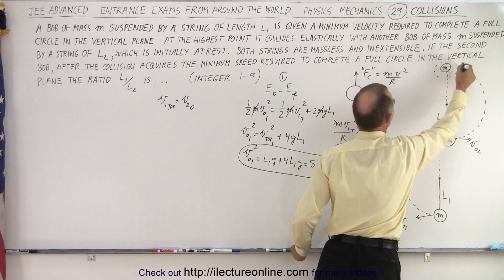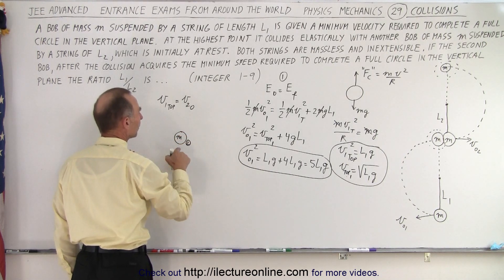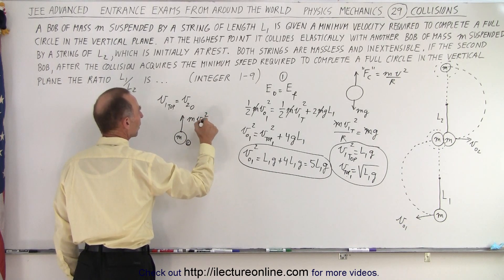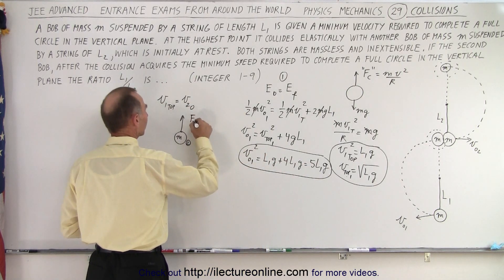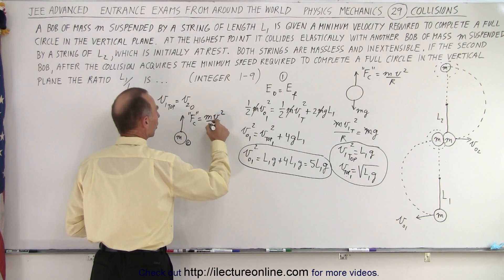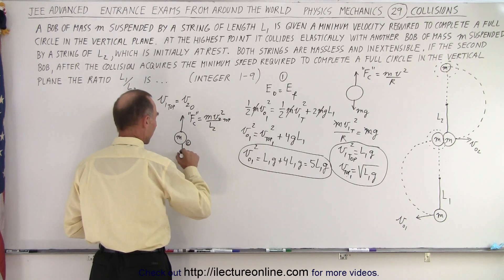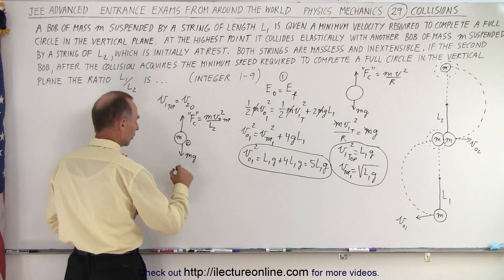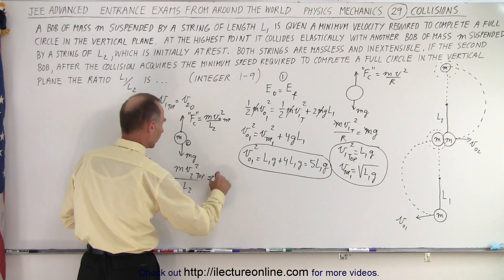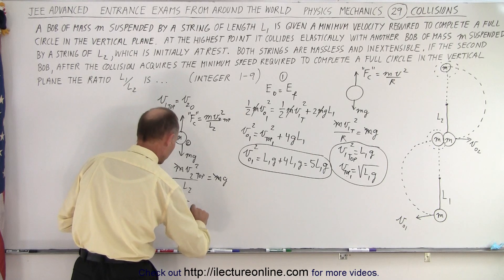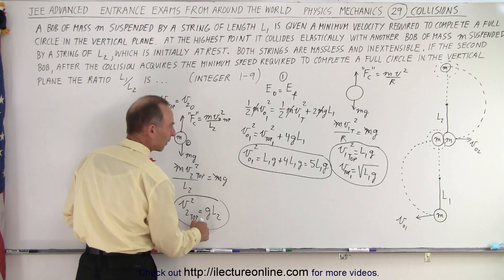For the second bob at the top of its circle, the centrifugal force mv2² / l2 must equal mg. The m's cancel out, giving v2_top² = g·l2. This is the same form of equation as for the first bob, just with l2 instead of l1.